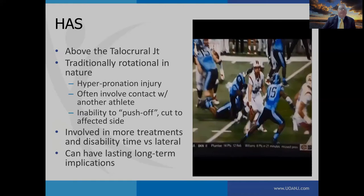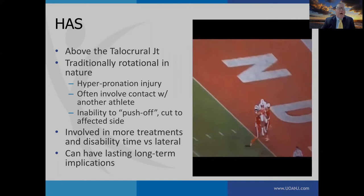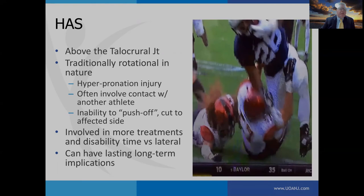Traditional high ankle sprains occur above the talocrural joint and are traditionally rotational in nature, often involving contact with another athlete. The chief complaint is inability to push off or cut to the affected side. They involve more treatments and disability time versus lateral sprains, and can have lasting long-term implications.